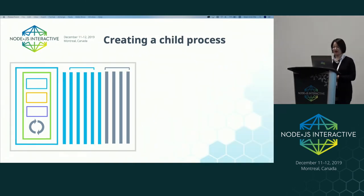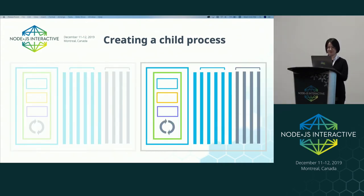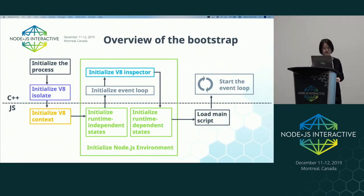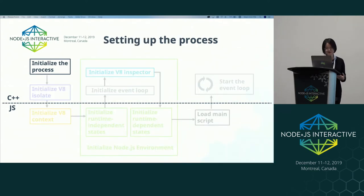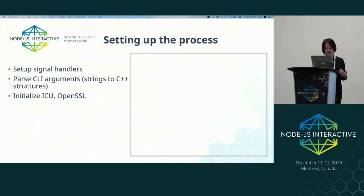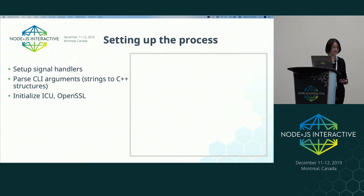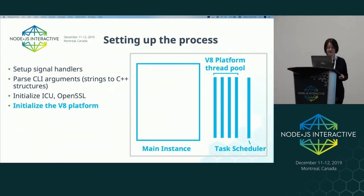Compared to that, spawning a child process is more expensive because we need to set up more stuff. Here is an overview of the new bootstrap process. First, we need to do a few setups that should only be done once per process. This includes setting up the signal handlers, parsing the command line arguments from strings to C++ structures, and initializing the dependencies, such as ICU for internationalization support and OpenSSL for crypto. Then we will need to initialize the V8 platform, which includes a task scheduler and thread pool that V8 can use to compile JavaScript or run garbage collection.